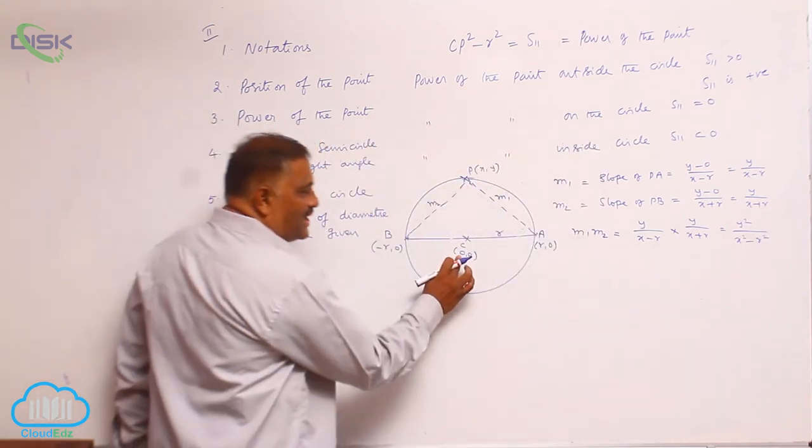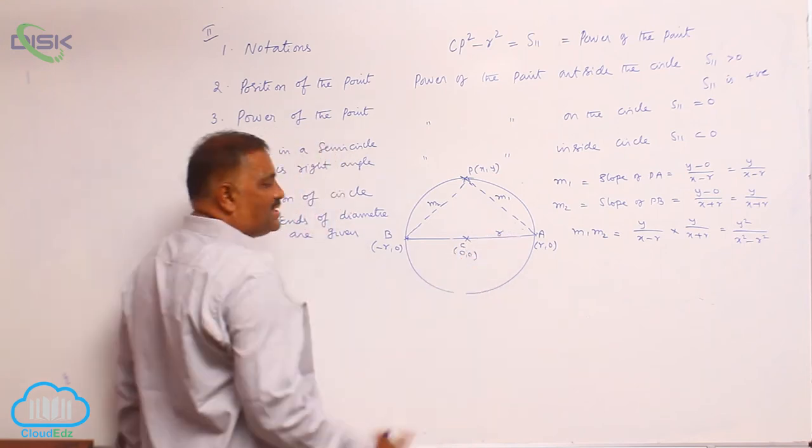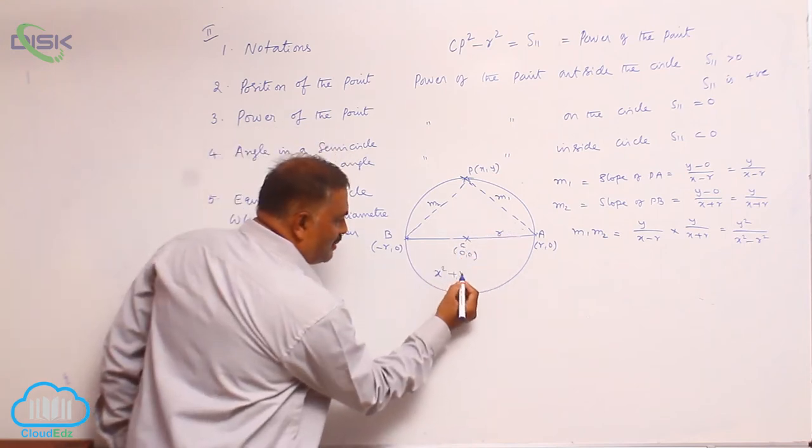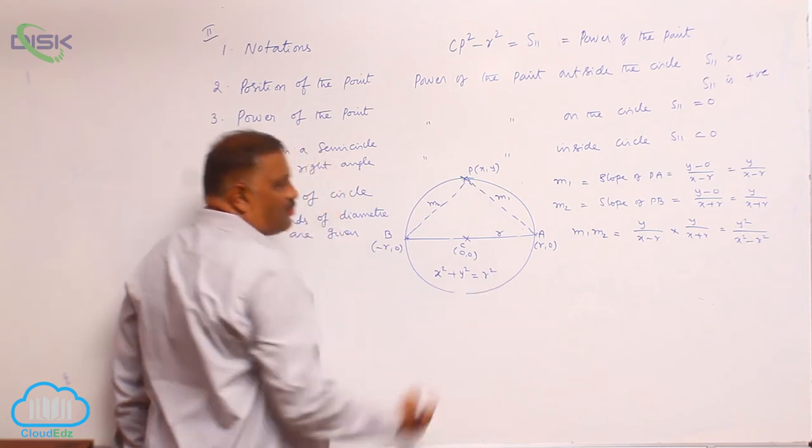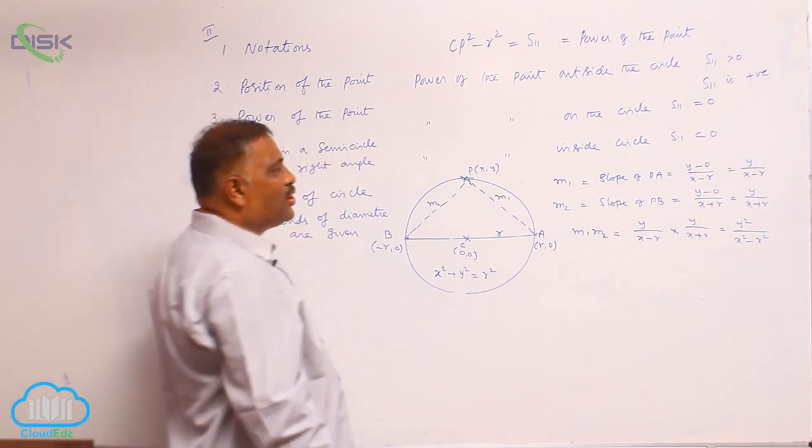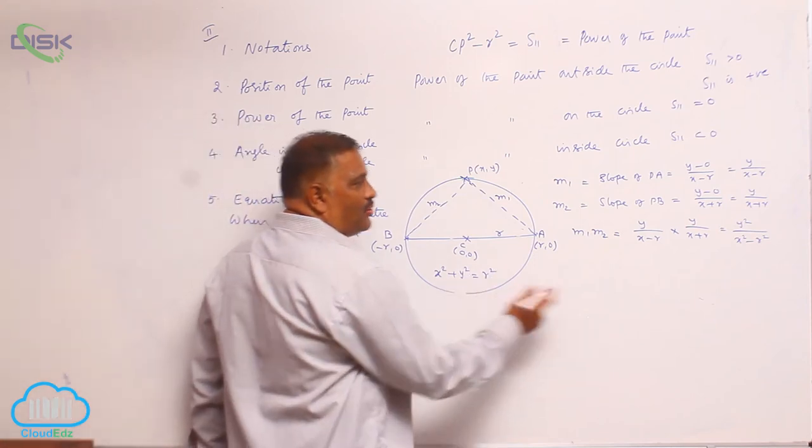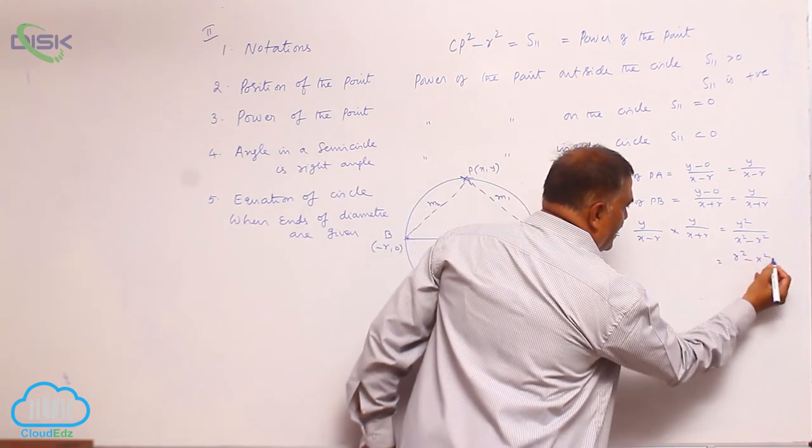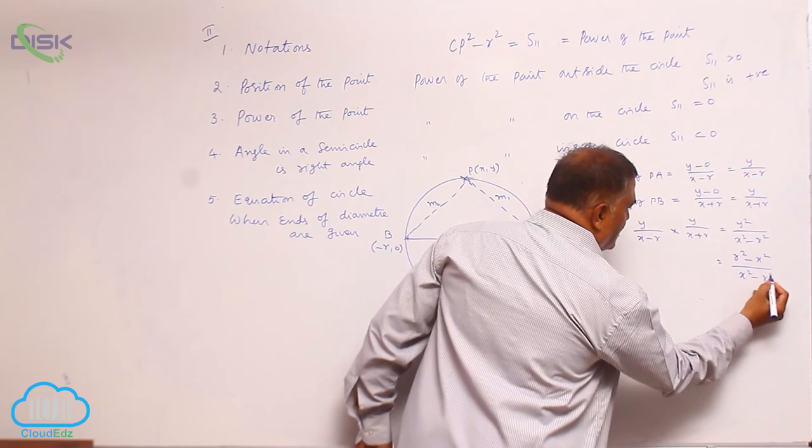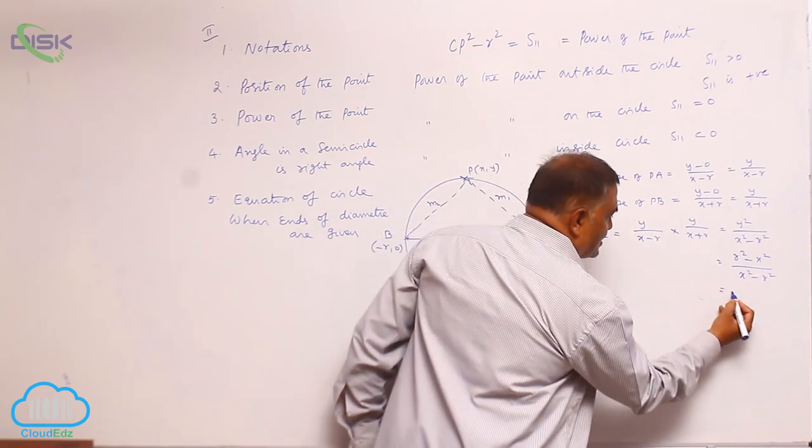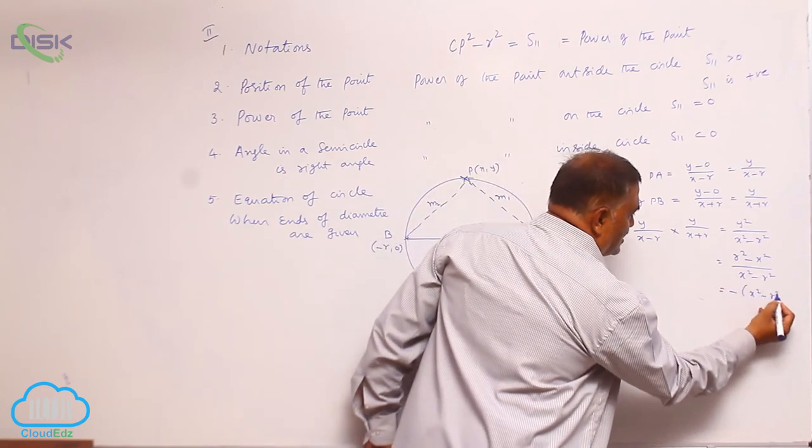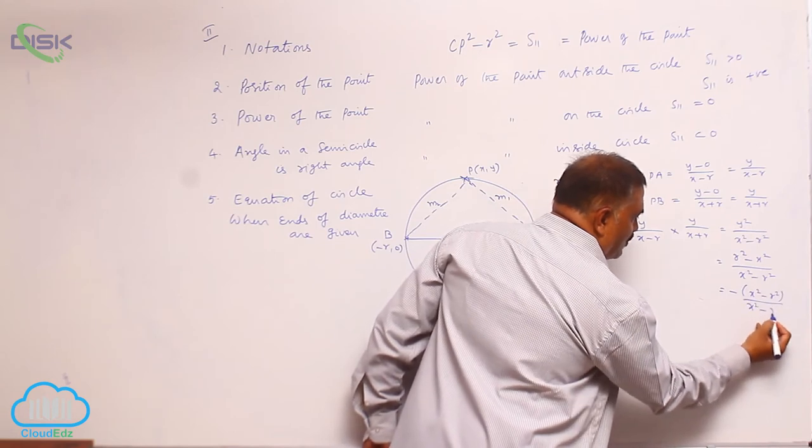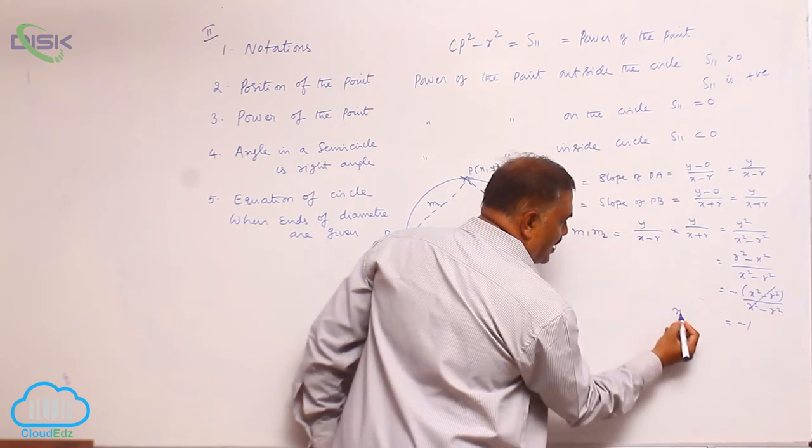You know that center is (0,0), R is the radius, means circle equation will be x square plus y square equal to R square. So what is y square value? It is R square minus x square divided by x square minus R square.